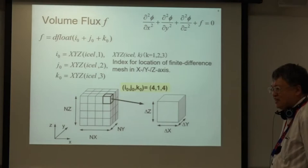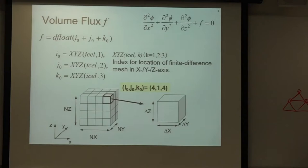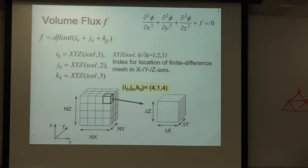The volume flux values depend on location. We have xyz arrays showing the location of each mesh in each direction: i0, j0, and k0. The value of F is a summation of these three coordinate values. So if the cell is close to the origin, F is very small, but if it is far from the origin, F provides larger values.